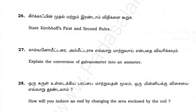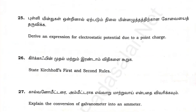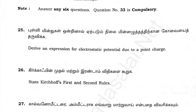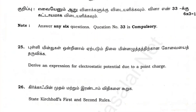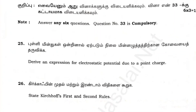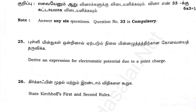How will you induce an EMF by changing the area enclosed by the coil? Question 22: Explain the conversion of galvanometer into an ammeter. Question 22: State the first and second rules (Kirchhoff's rules). Question 22: Derive an expression for electrostatic potential due to a point charge. So, 3 mark, 6 and 5 mark.